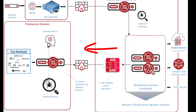A pull method can be contrasted with the default push method used in NetBackup. In a push model, the source domain independently calculates and controls when to initiate a replication job to a target domain. By initiating a data transfer request from inside the IRE domain, you have better control over data flow to further secure the environment, both logically and physically.